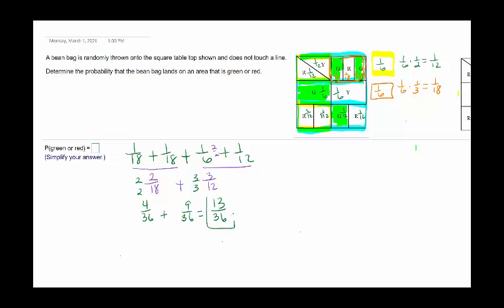That is my probability for green. If it just asked for green, that would be my answer. It cannot be simplified. This also asks for OR, which means include red.